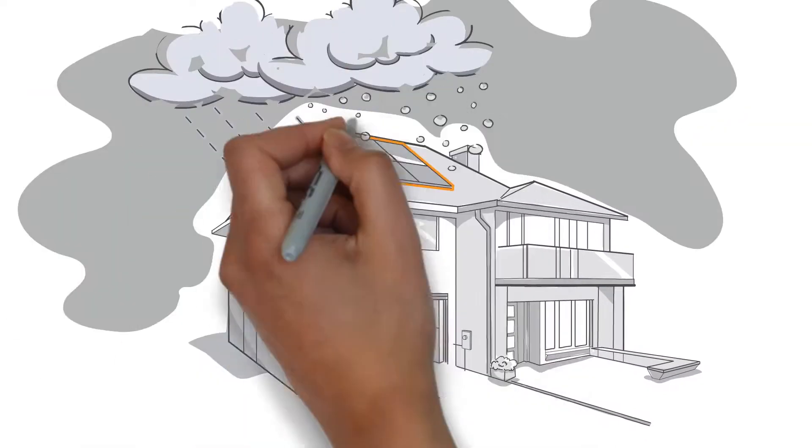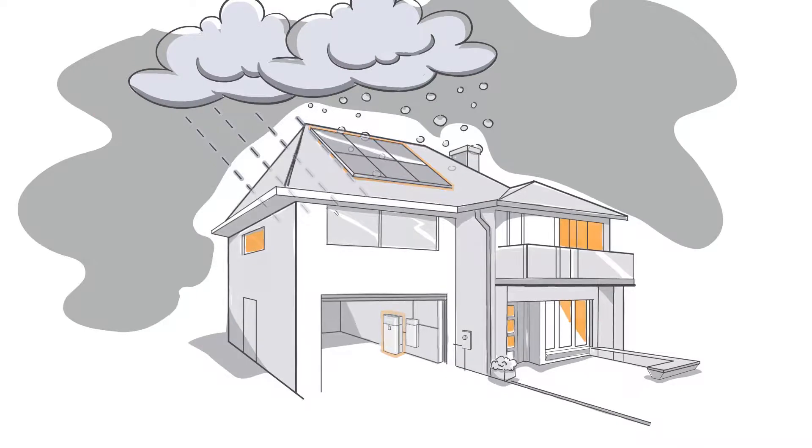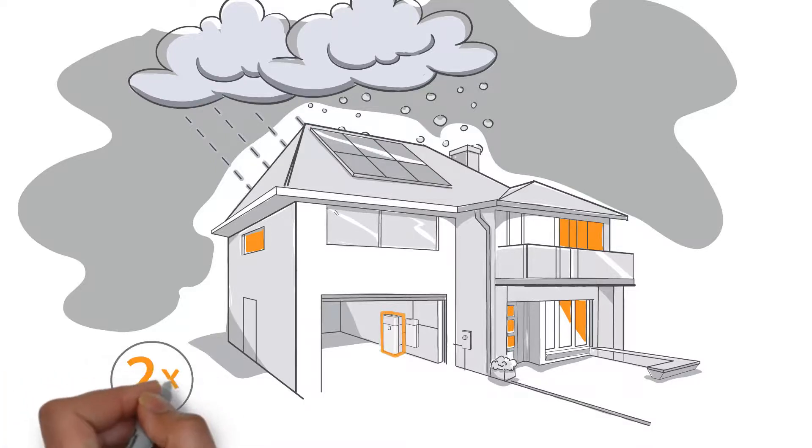If the power goes out, you can use that stored energy to keep the lights on or run essential appliances like your refrigerator. With SunVault, you get two times the power of conventional storage systems, so you can run more of your home in an outage.